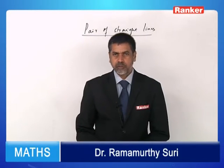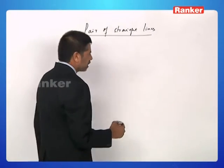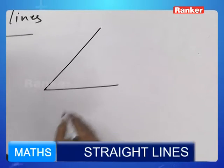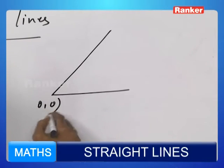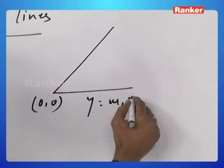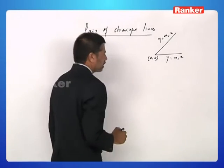Let us have a brief synopsis on pair of straight lines. Basically, pair of straight lines are of two types. A pair of straight lines intersecting at the origin. Let us say y equals m1x and y equals m2x are the two straight lines.